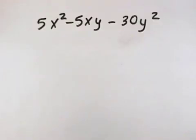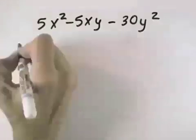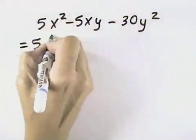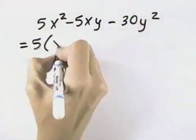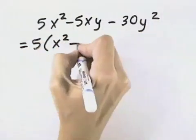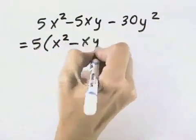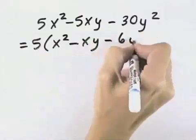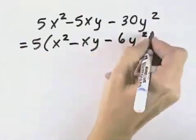We want to completely factor this problem, so we first take out the greatest common factor, which is 5. When we divide each term by 5, we're left with x squared minus xy minus 6y squared.